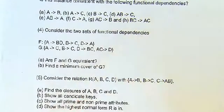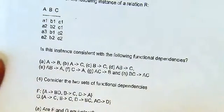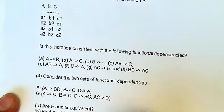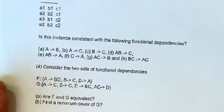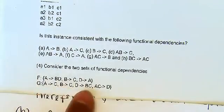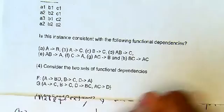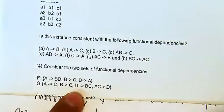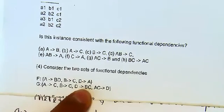Now the next part of question 4 is to find the minimum cover of G. For step one, we ensure the right-hand side of every functional dependency has a single attribute. So G decomposes to: A→C, B→C, D→C, D→B, and AC→D.